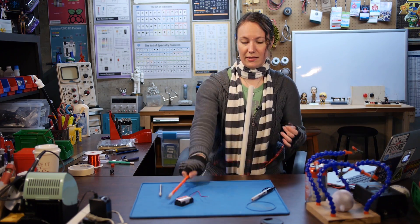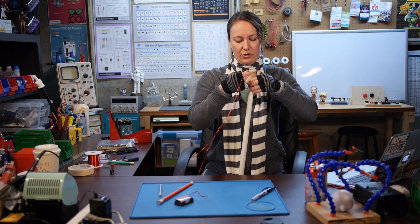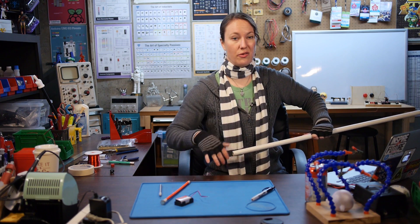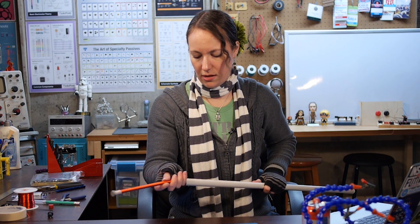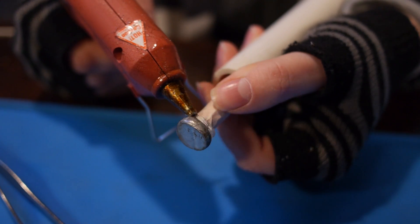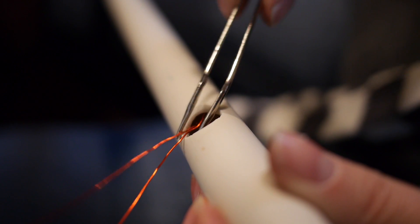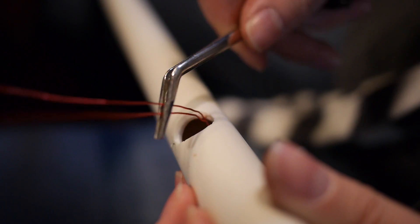Next, we'll add our electromagnet. We're going to insert the ends of the wire into the bottom, so that they are running towards the hole that we just drilled in the handle. Pull the ends of your magnet wire out the hole for the button.